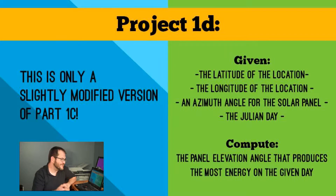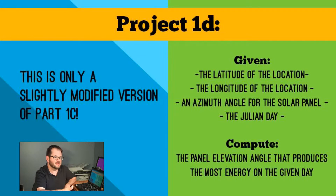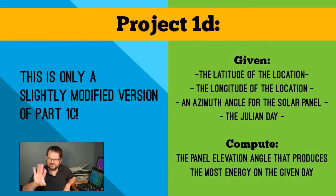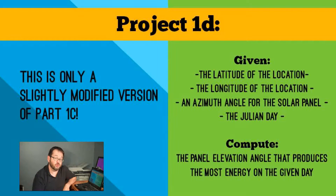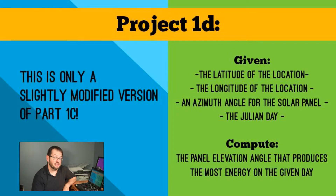For Part 1D, it's basically just a slightly modified version of Part 1C. I'm still giving you a city and you have to look up the latitude and longitude. You've got the latitude and longitude, you've got the Julian day, and you have an azimuth angle for the solar panel. We're going to say the panel always needs to face south. The question is what is their elevation angle? I want you to compute the panel elevation that produces the most power on a given day — what panel elevation angle would produce the most energy over the course of the day per square meter of the panel's area.